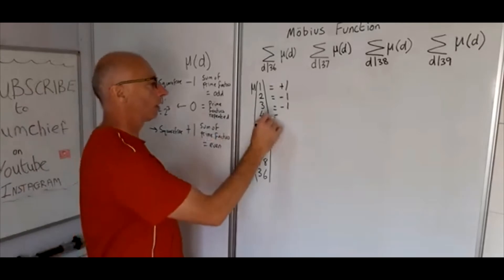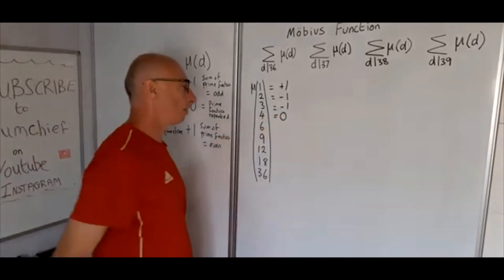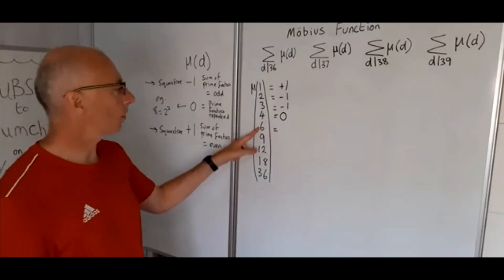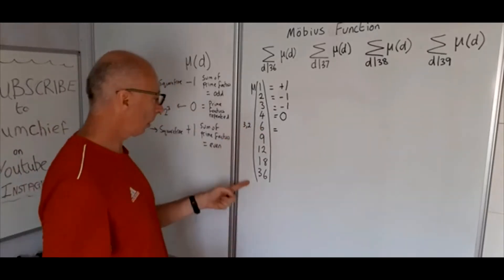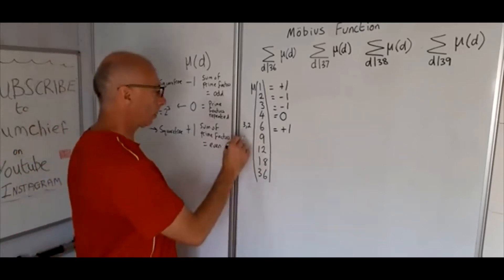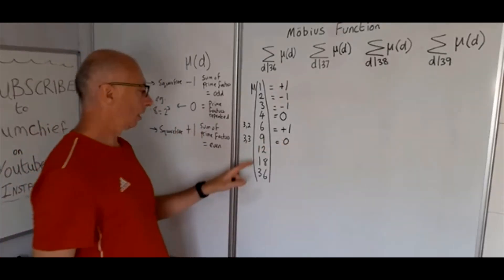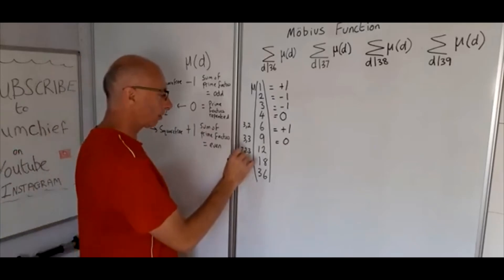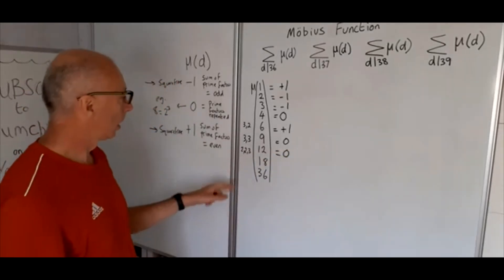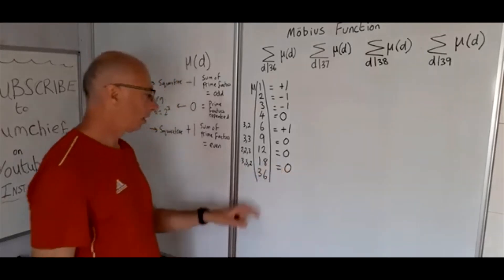Now for 4, this is where we come to prime factors repeated, so 4 is 2 squared, so that takes the value 0. Okay, the number 6, prime factors is 3 and 2, so therefore that takes the value plus 1, that's even. 9, so 9 is 3 and 3, we've got repeated, so therefore it takes the value 0. 12 is 2 times 2 times 3, so again we've got repeated prime factors, so that one takes 0. 18 is 3, 3, and 2, again we've got repeated, so that again takes the value 0.